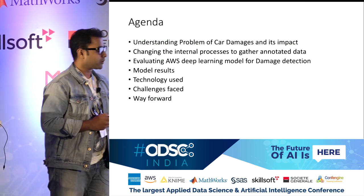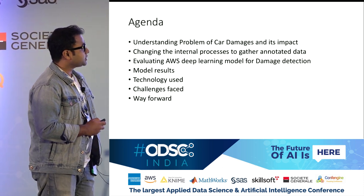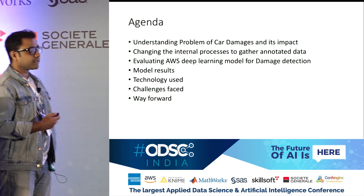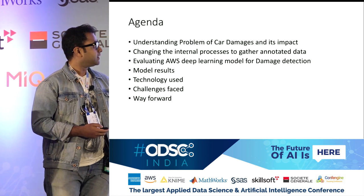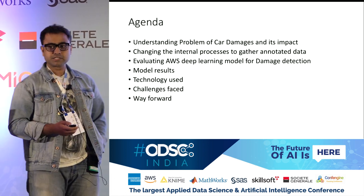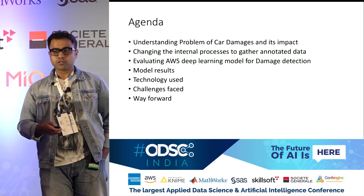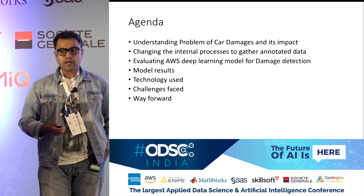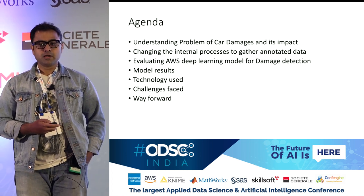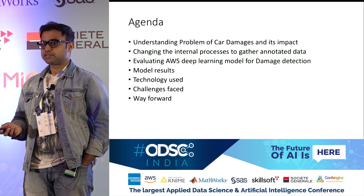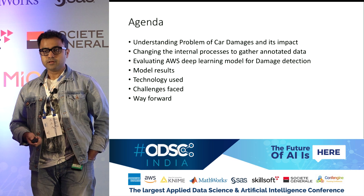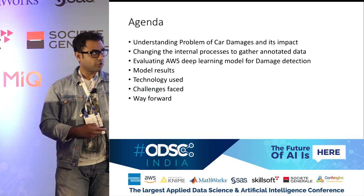Let's go through the agenda. We will be talking about car damages as a day-to-day use case for us — understanding what the problem is, how big it is, and the internal processes we have set up to solve it at scale. Then we'll cover how we have deployed machine learning models and how AWS SageMaker is helping us. Finally, we'll talk about the challenges that are still unsolved and the way forward.